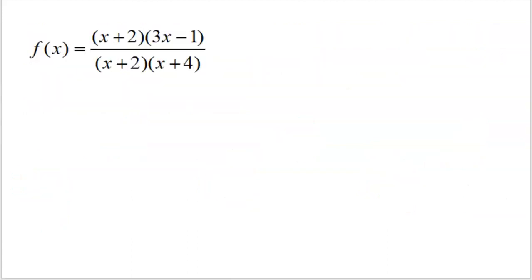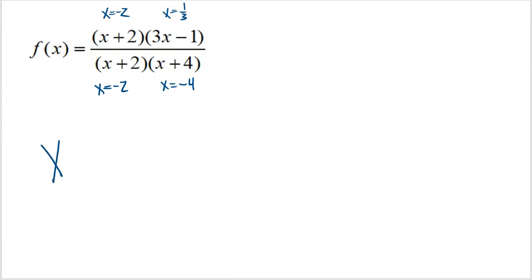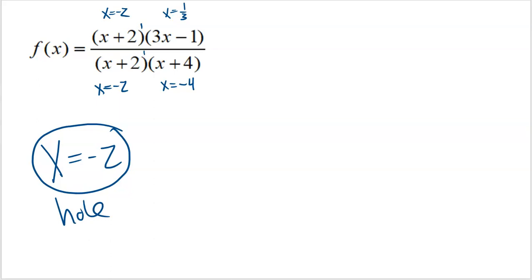Let's look at a much easier example. We have a function that's already factored. First, identify all values that make zero. In the numerator we have x equals negative two and x equals one third. In the denominator we have x equals negative two and x equals negative four. We notice that at x equals negative two, both the numerator and the denominator are going to be zero, and the multiplicities on those are both one. So there's going to be a hole at x equals negative two.